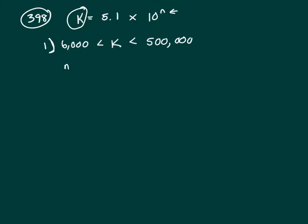Well, let's look at 5.1 times 10 to the n. If n is 1, that gives me 51, because 5.1 times 10 just moves your decimal one place to the right. If n equals 2, you've got 5.1 times 100. That's going to move it two places to the right, or 510.